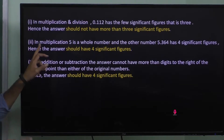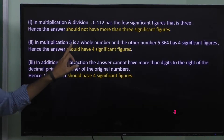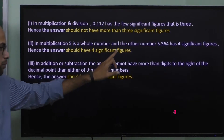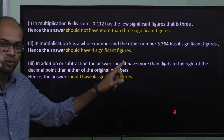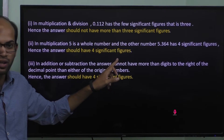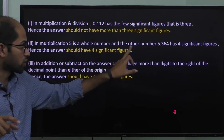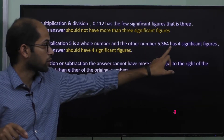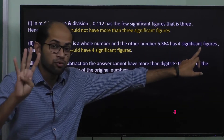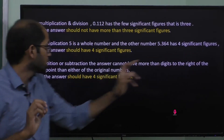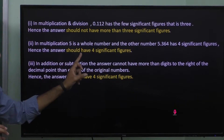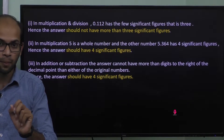Second question: multiplication. 5 is the whole number. 5 into 5.364 — the other number, 5.364, has 4 significant figures. Hence, the answer should have 4 significant figures.